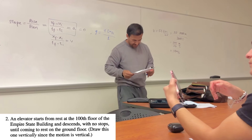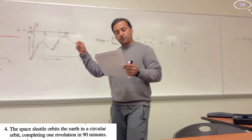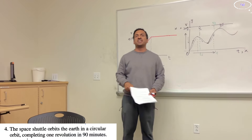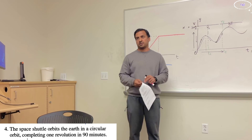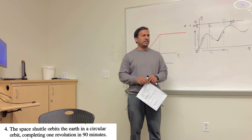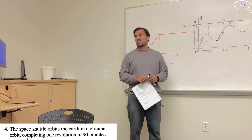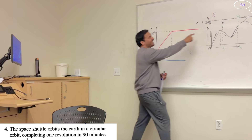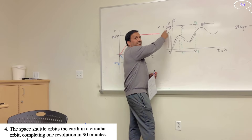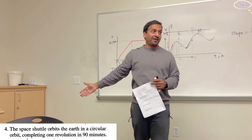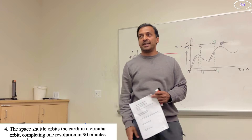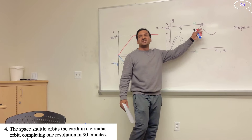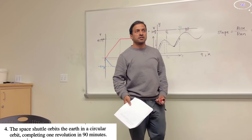Problem 4: a space shuttle orbits the earth in a circular orbit completing one revolution in 90 minutes. Space shuttles move at constant speed in orbit. So the graph is a straight horizontal line — the speed stays constant at roughly 7–8 kilometers per second. They just go round and round at constant speed.